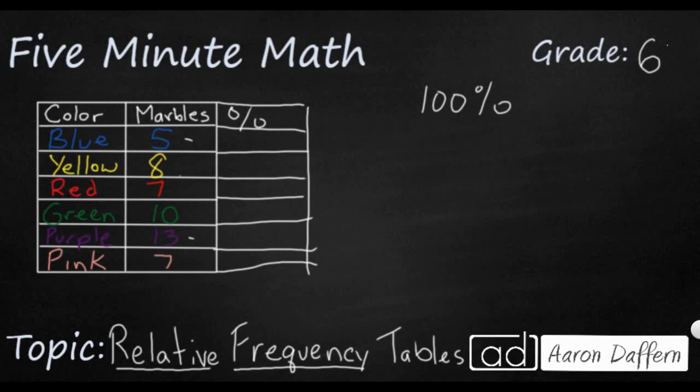And that's going to come from simply adding them up. And what we have is we have a total of 50 marbles. So 50 marbles equals all of the marbles. And what we want to do is create a relative frequency of each of these.